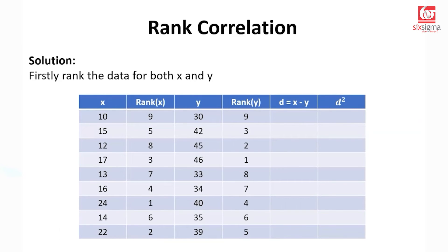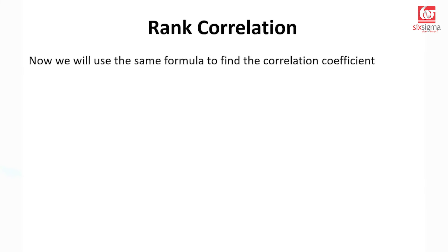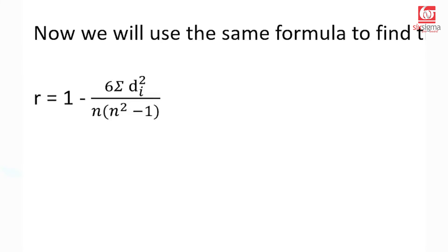Now we have to calculate the difference between the ranks. So we have to take the difference between rank of x and rank of y. Now these differences could be positive or negative, but we have to do d square. We saw that in the formula as well. So we will square all these values and sum them up. Next, we will apply the specific formula for Spearman's rank correlation, which is 1 minus 6 times the sum of di square divided by n, n square minus 1.